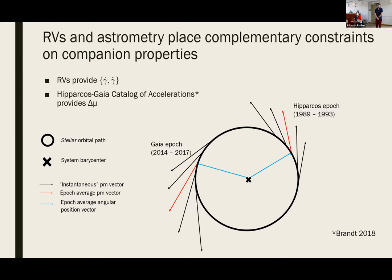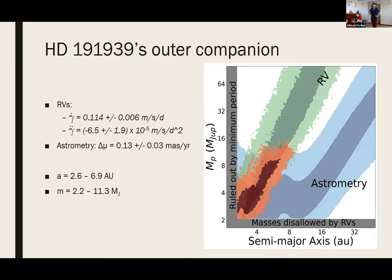On the question of improving astrometric constraints by incorporating EDR3 proper motions: yes, the newest constraints we've put on this companion do incorporate EDR3. In fact, prior to incorporating EDR3 — using just Gaia DR2 — there was no significant detection of proper motion in HD191939, which significantly increased the number of possible models for astrometry in the low-mass regime. Incorporating EDR3 did help quite a bit.